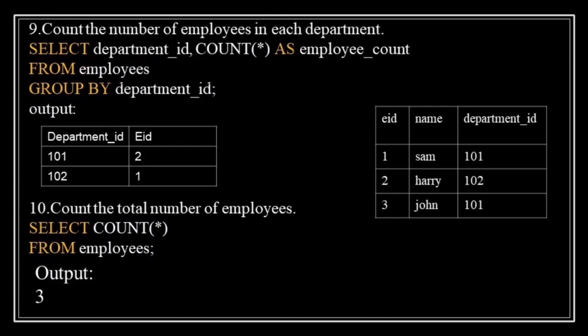Count the number of employees in each department. This is useful to know how many people work in each part of a company. The query is: SELECT department_id, COUNT(*) FROM employee GROUP BY department_id. 'SELECT department_id, COUNT(*)' selects the department and counts employees in each group. 'GROUP BY department_id' groups results by department. The result might show two employees in department 101 and one in department 102.